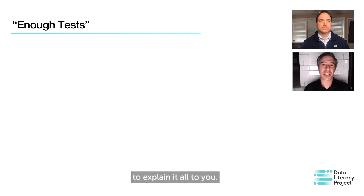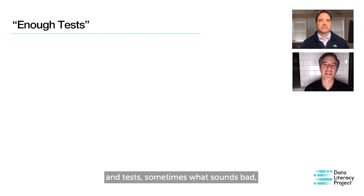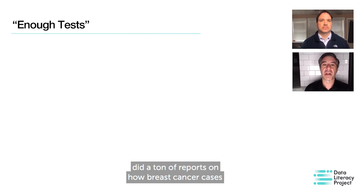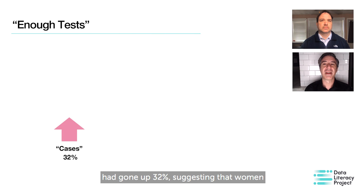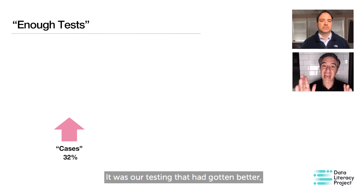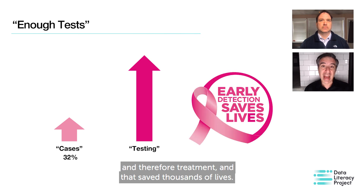And of course, Kevin and I will be here to explain it all to you. But before we wrap up, there is one thing I want to emphasize. When it comes to data that you see on diseases and tests, sometimes what sounds like bad news can actually be very good. In the late 1980s, the news media did a ton of reports on how breast cancer cases had gone up 32 percent, suggesting that women were getting breast cancer far more often. But that wasn't true. There were the same number of cases — it was our testing that had gotten better. More and more women were getting early screening and therefore treatment, and that saved thousands of lives.